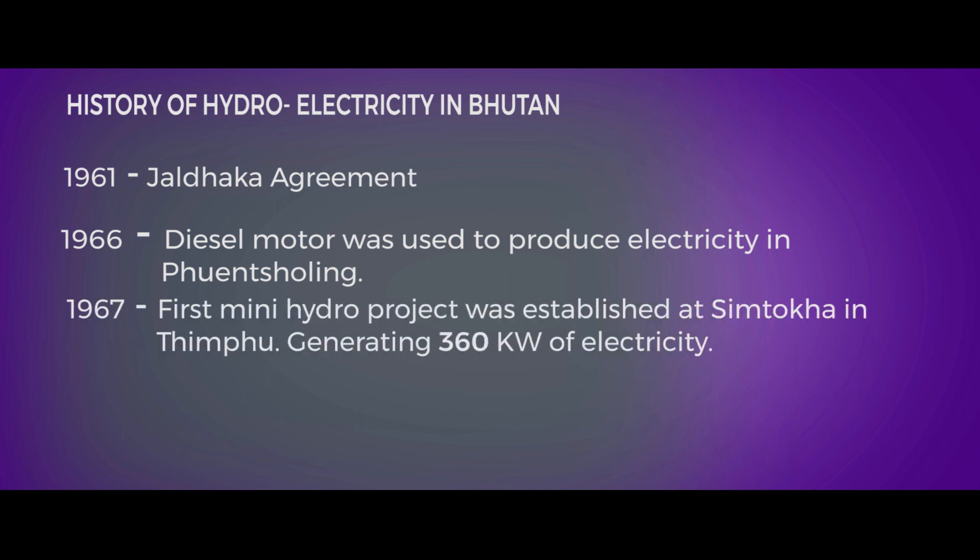In 1967, the first hydropower plant was set up at Semtokha in Thimphu with a generating capacity of 360 kilowatts of electricity.